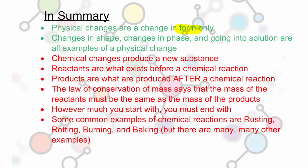Chemical changes produce a new substance. A new chemical substance has to be produced. Reactants are what exist before you have a chemical reaction. Reactants react together, and they produce products. Products are what are produced after a chemical reaction occurs.